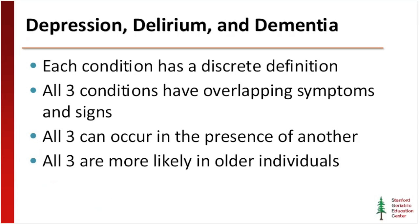Trying to distinguish these three problems and know when you're dealing with which one has been a difficulty that has really plagued the field. There has been a lot of attention to understanding the differential diagnosis, and it's critical because the question is what you are going to do in terms of treatment. Each of these conditions — depression, delirium, and dementia — is a discrete condition with a discrete definition. However, all three have overlapping symptoms and signs, and all three can occur in the presence of the other. These three problems are much more likely to occur in older adults, which is why this is part of geriatric psychiatry.